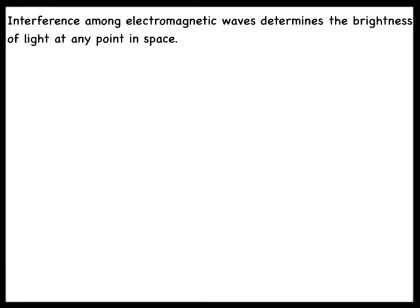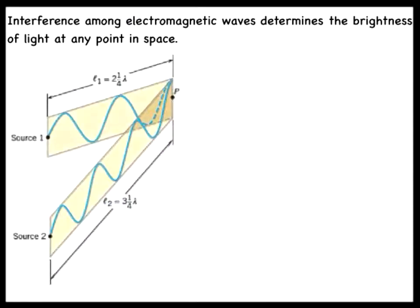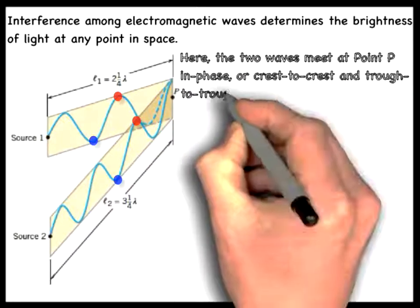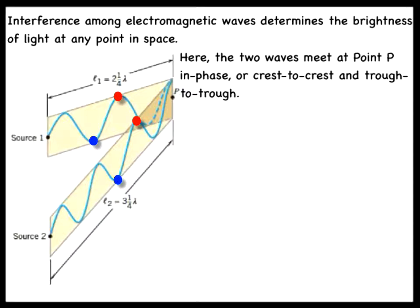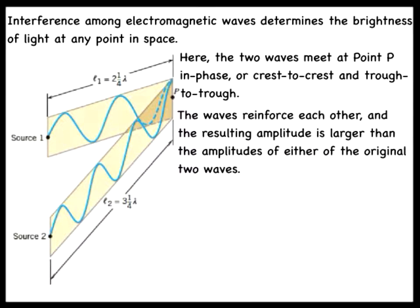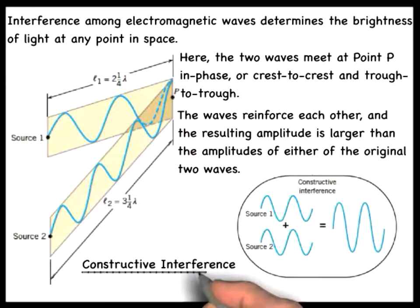The following figure illustrates what happens when two identical waves meet and interfere at a common point in space labeled point P. First, we consider the case where the two waves meet at point P in phase. This means they meet crest to crest and trough to trough. By the principle of linear superposition, the waves reinforce each other, and the resulting amplitude is larger than the amplitude of either of the individual waves. This is known as constructive interference.